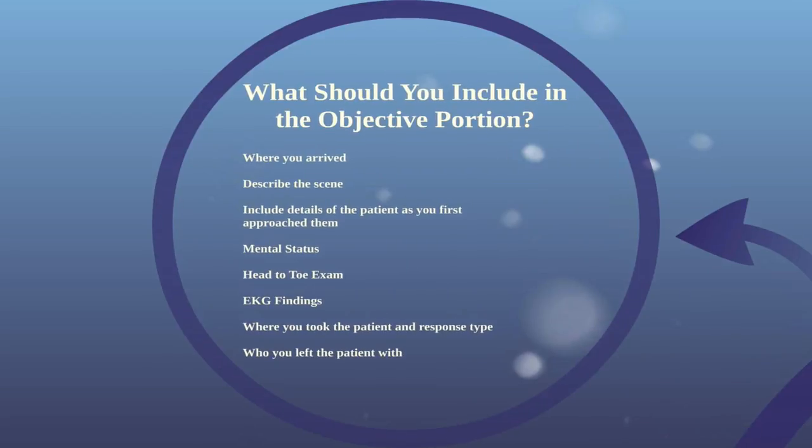So what should you include in the objective portion of your charts? State where you arrived. Was it a home? Was it a business? Was it clean? Were there things strewn about? You've got to describe that scene. As a chart reviewer, I'm always looking for people to paint a good picture so that I can picture myself in their shoes in front of the patient. It's okay to include lots of detail about the scene and where you showed up.